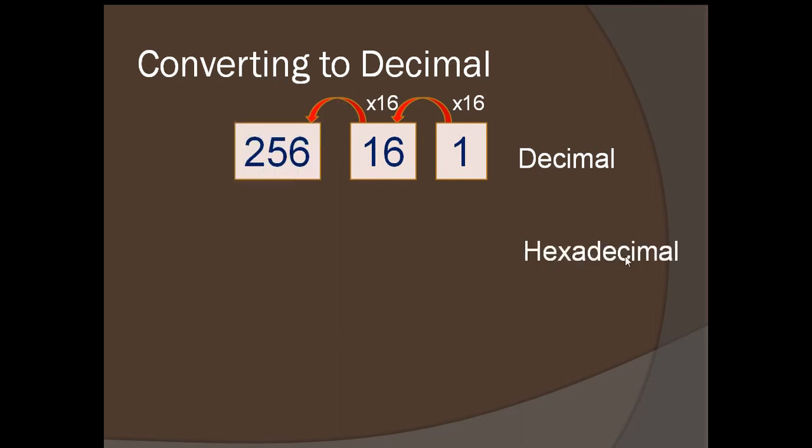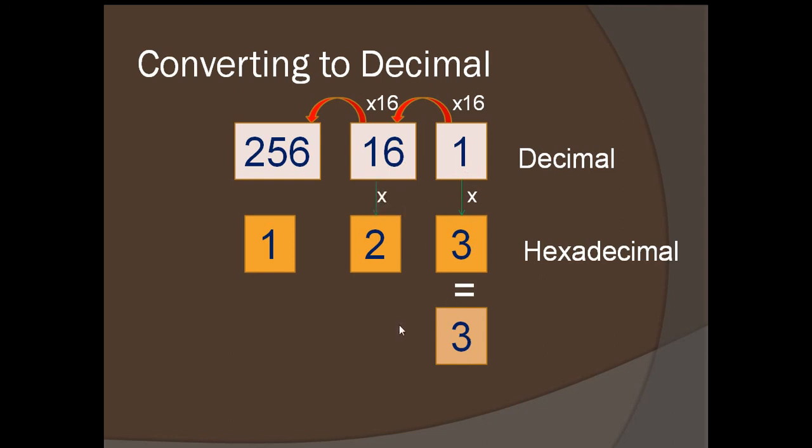If you have a hexadecimal number like 123, we put each digit in its position. You take each digit and multiply it by the decimal value of its position. 1 times 3 is 3, 16 times 2 is 32, and 256 times 1 is 256. When you add all that together, you get 291 in decimal. So 123 in hexadecimal is actually 291 in decimal.